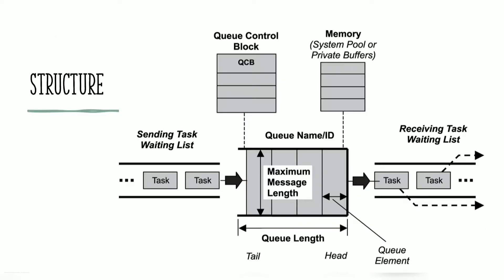Looking at the structure of message queues: there is a sending task waiting list — tasks here are waiting to send messages to the message queue. There is also a receiving task waiting list — these tasks are waiting to receive messages from the message queue. Every section of the message queue is a message, also called a queue element. The data inside the message queue is in a structured format; an entire message is put as a single element.